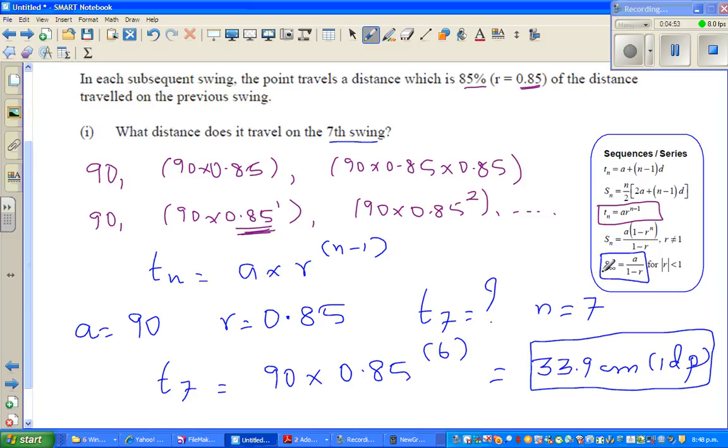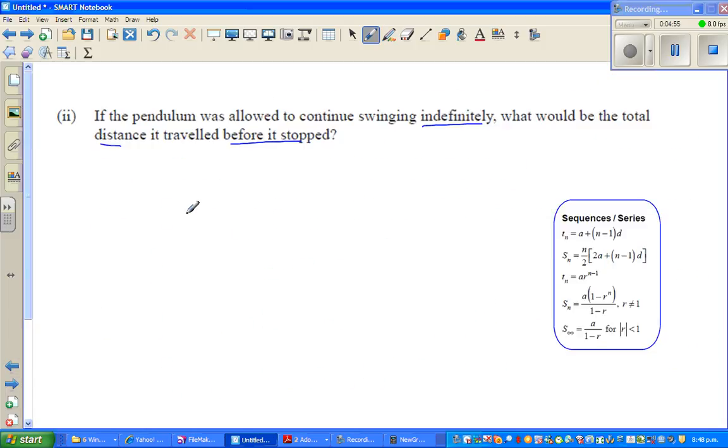S infinity, let me write the formula. This is, I call it a sleeping 8, is A over 1 minus R. Now this formula is used only when R is less than 1, or it is between 0 and 1.